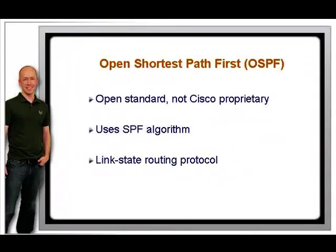Another scalable routing protocol is the Open Shortest Path First, OSPF, protocol. OSPF was developed by the Internet Engineering Task Force, IETF, in 1988 as a more scalable solution than RIP. Unlike EIGRP, OSPF is an open standard and is not Cisco proprietary. It uses the Shortest Path First, SPF, algorithm.